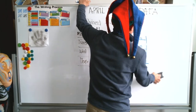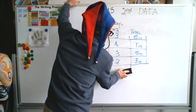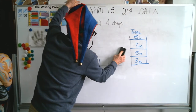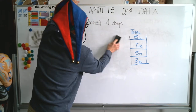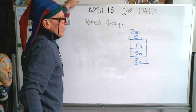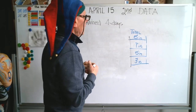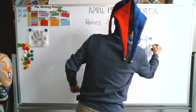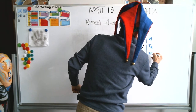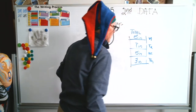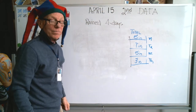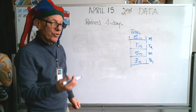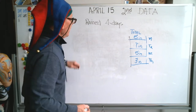Now let's take and keep our totals — let's get rid of everything else. So we have our total rainfall over those four days. This is Monday, Tuesday, Wednesday, and Thursday. Now we can build a graph just by using those totals.